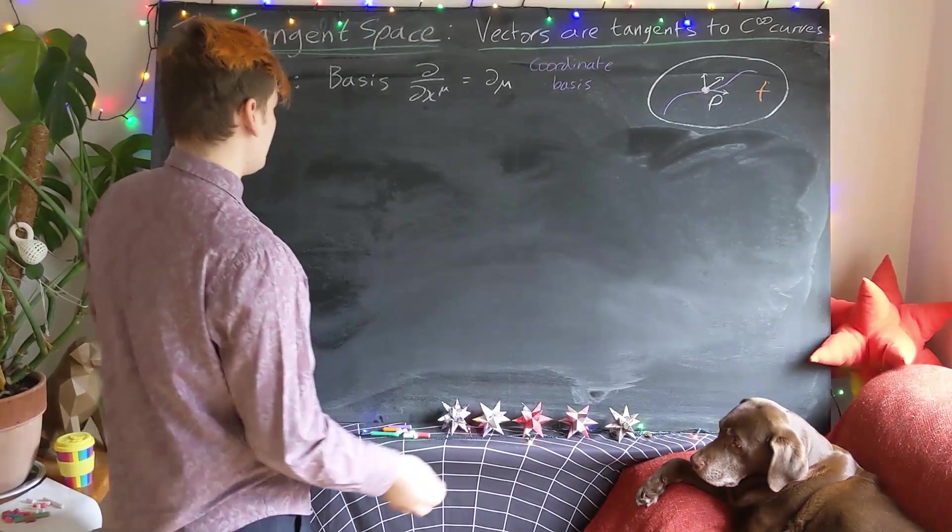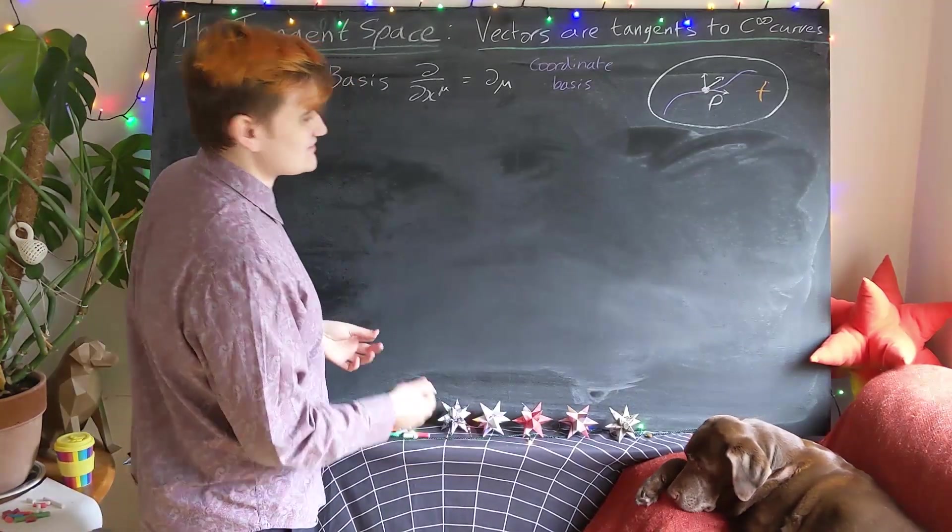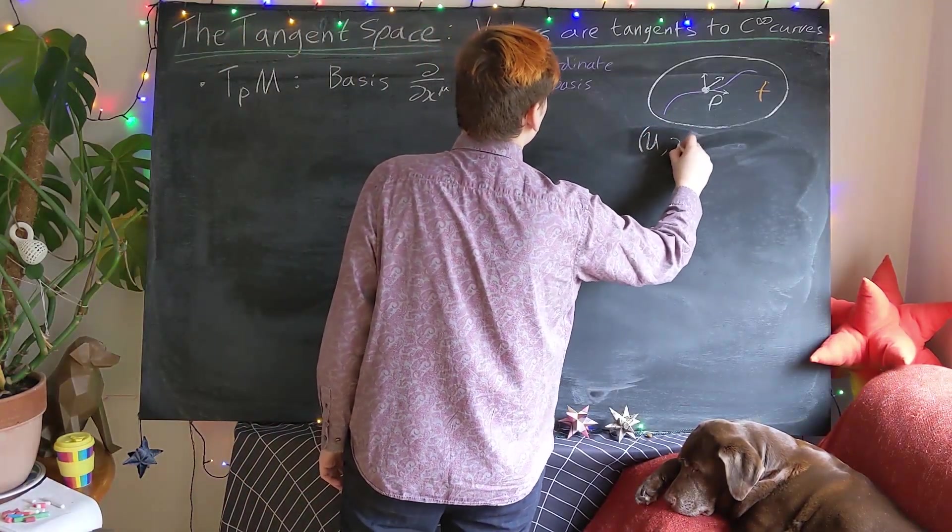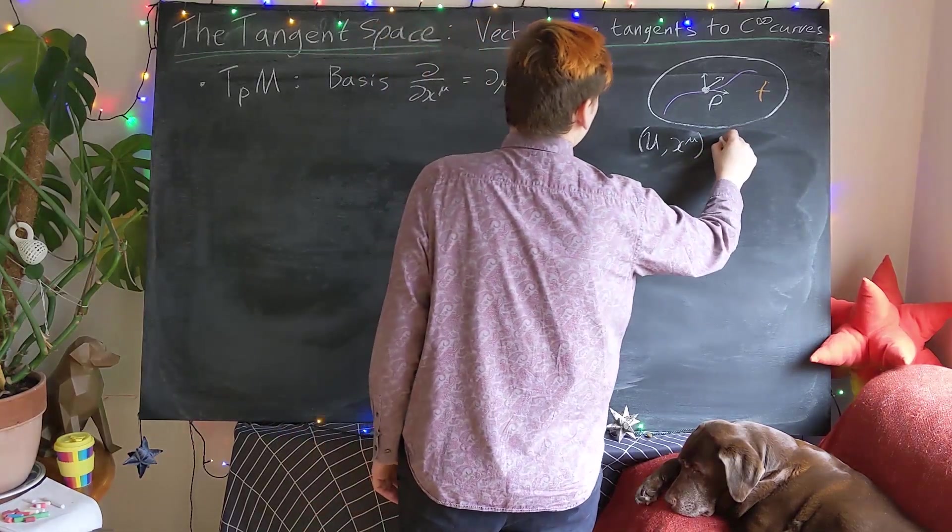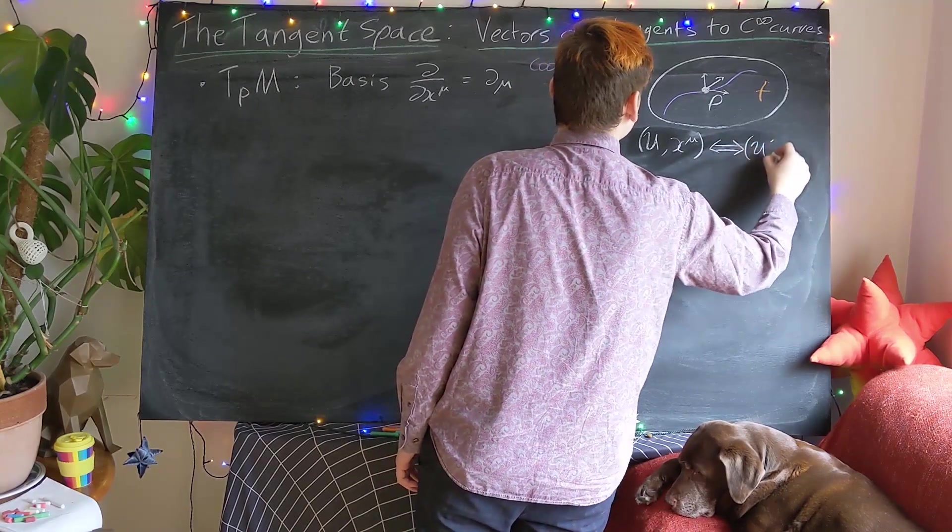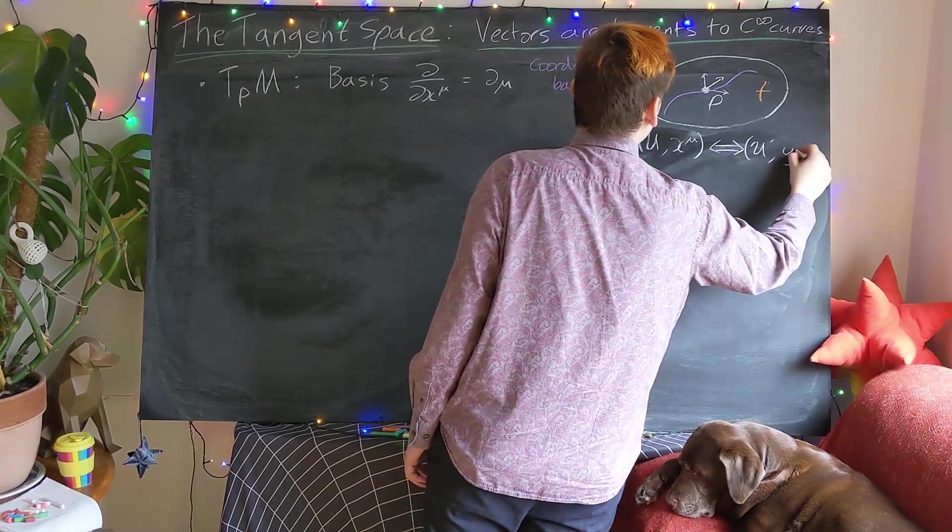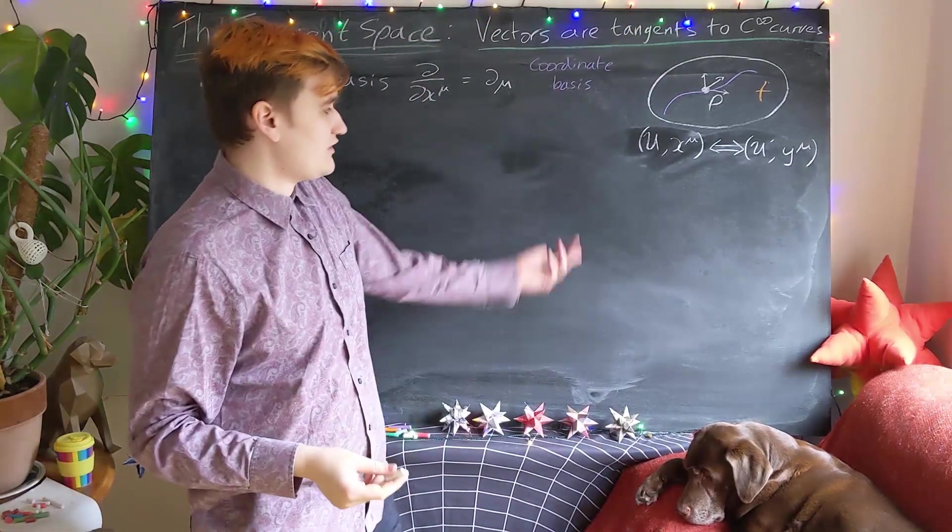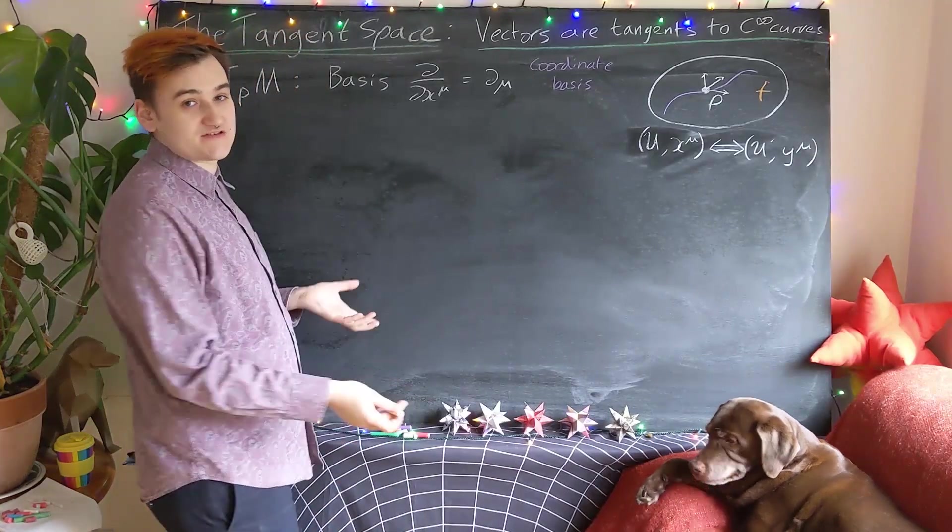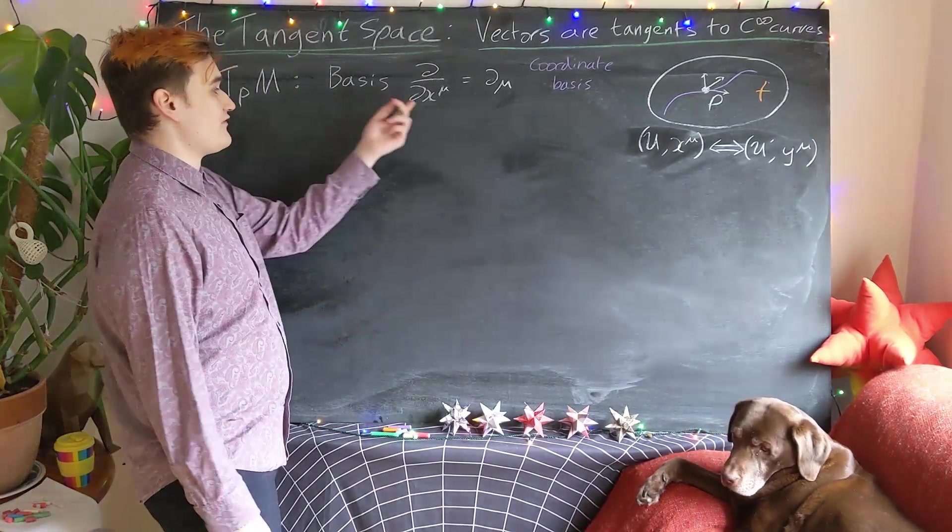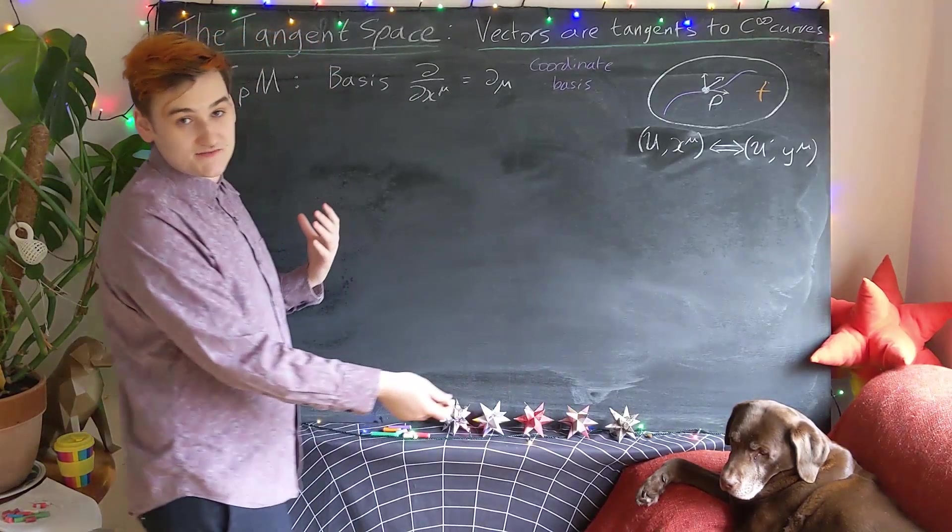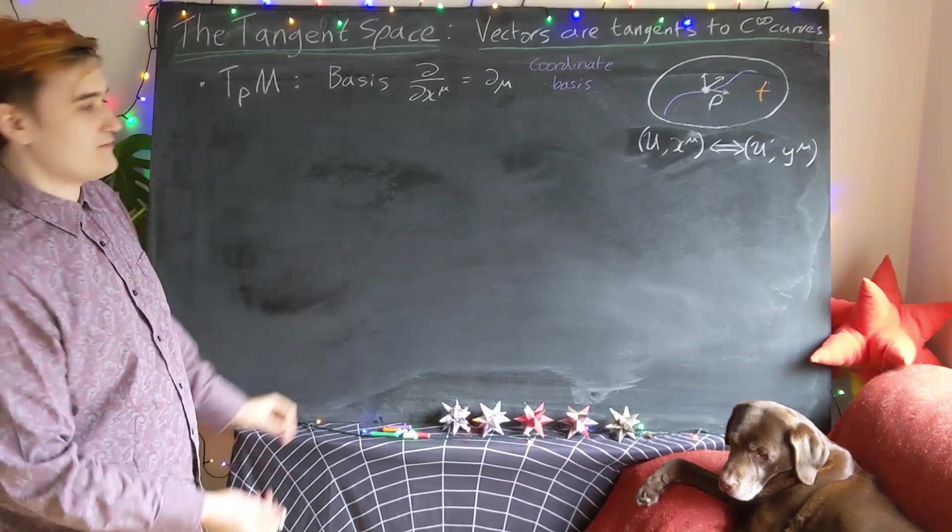Now, of course, as we know, with manifolds any set of coordinates is perfectly valid. We can create one chart with coordinates x and then freely transition between another chart with coordinates y. We know how to do this with the transition functions. So we should expect that we can do something similar with vectors. Namely, if we have a vector in one coordinate basis, we should be able to just transform and easily find that vector in another coordinate basis.